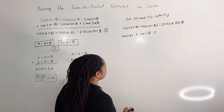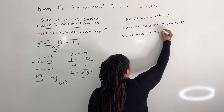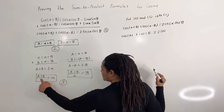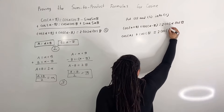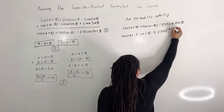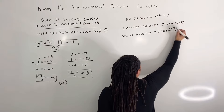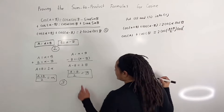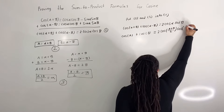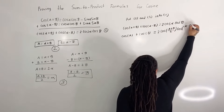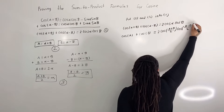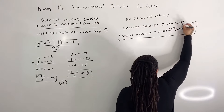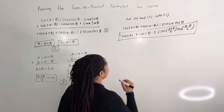And this is equal to 2 times cosine of — we said that alpha is equal to a plus b over 2 — so we have a plus b over 2, times cosine of — beta is equal to a minus b over 2 — so we have a minus b over 2. And here is our first formula for cosine.